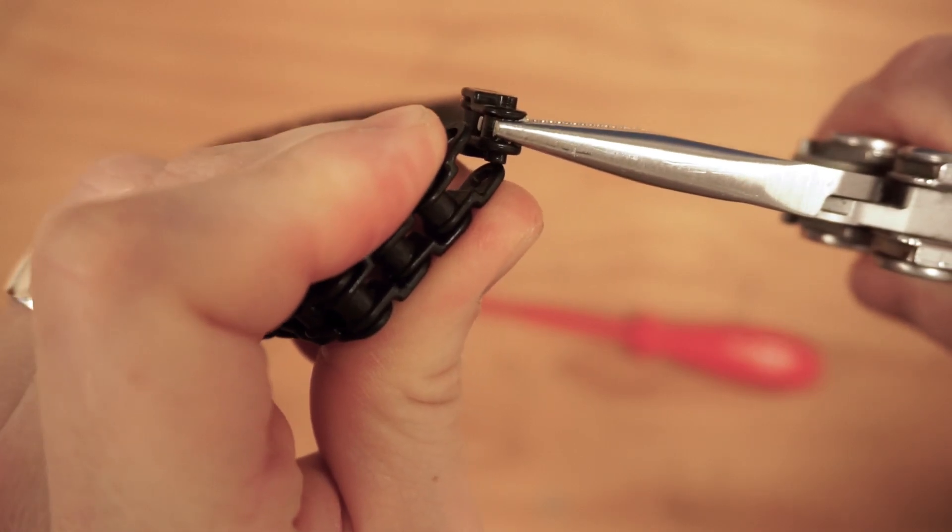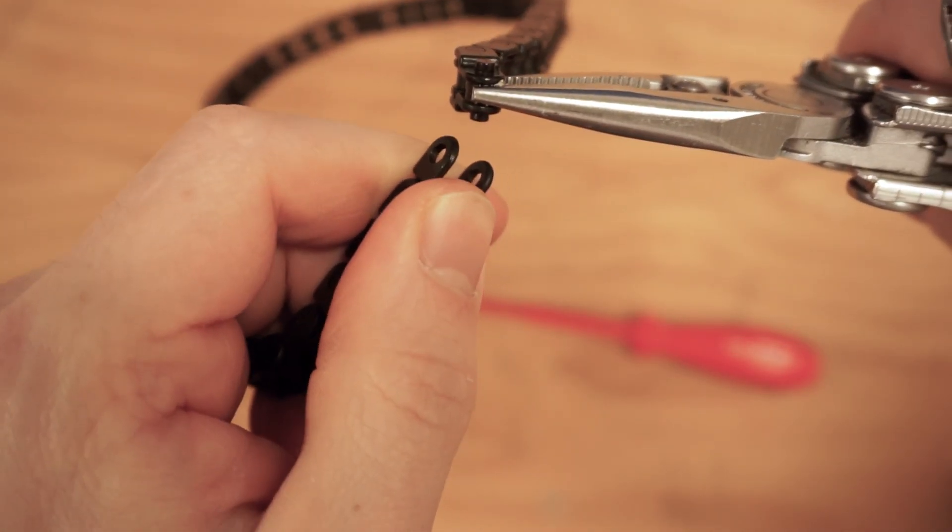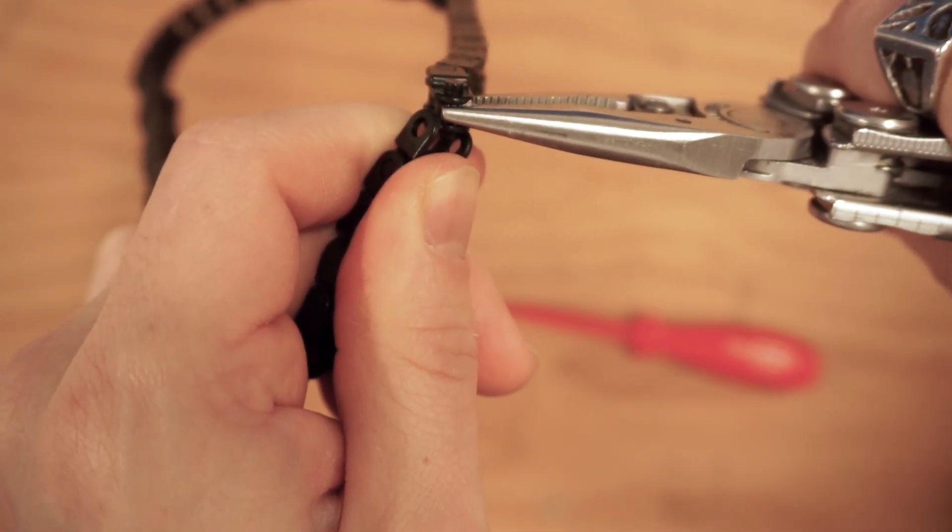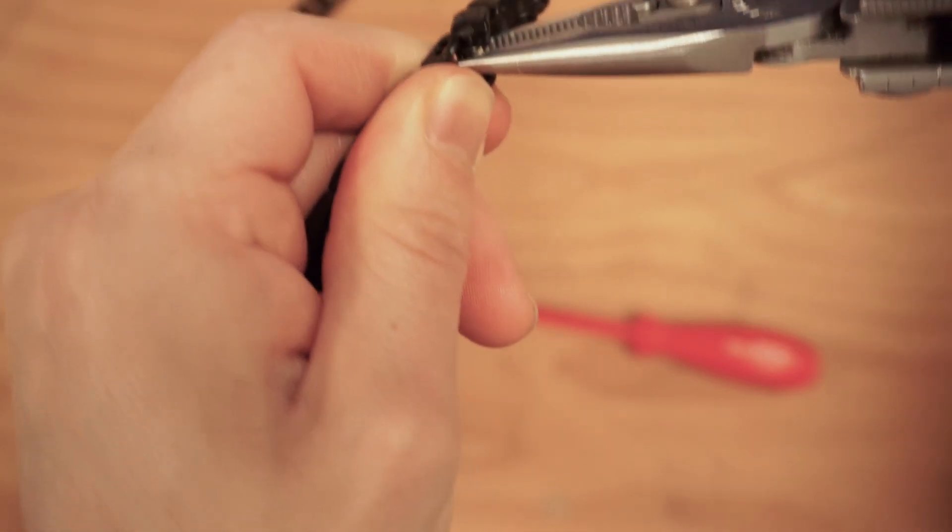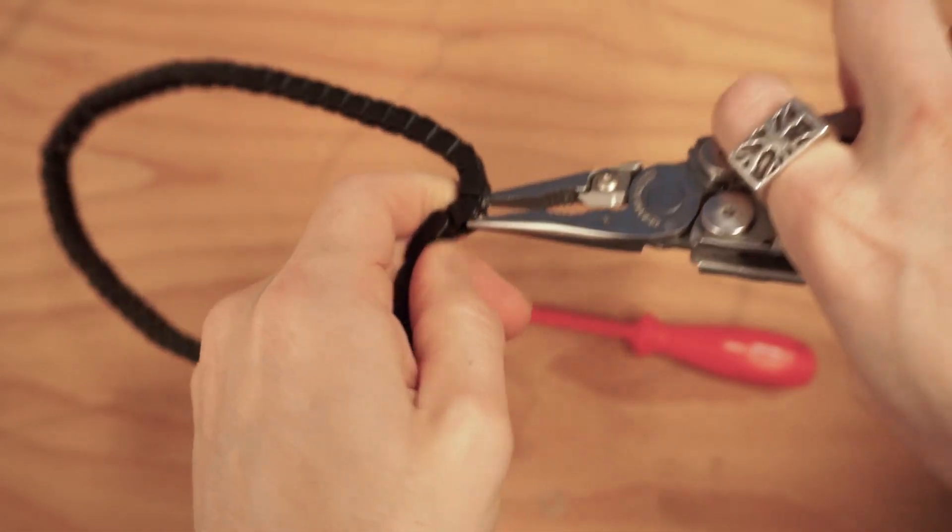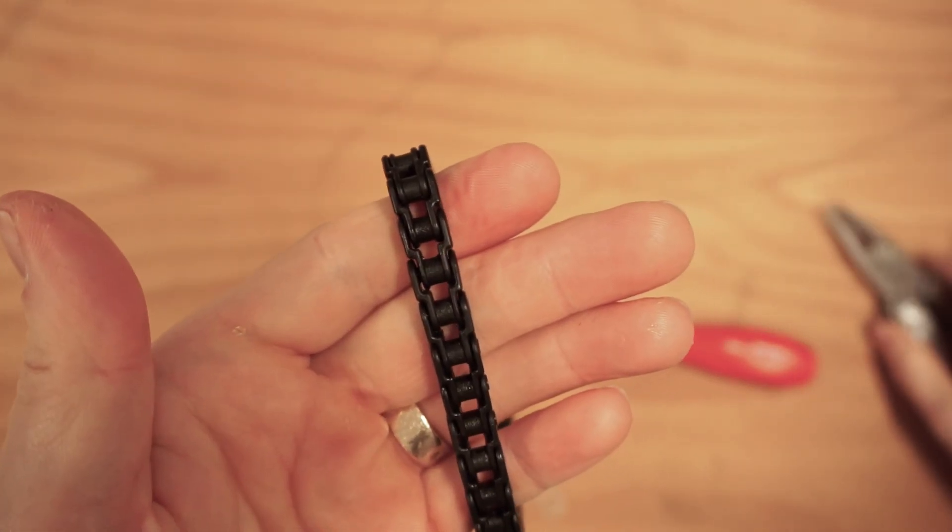So I lean it in. Let's grab it appropriately here. So I'm holding this one nice and firm in this hand. I lean this one in and I'm pushing down until I get it in that little hole. And then I simply twist over to be able to snap that in.